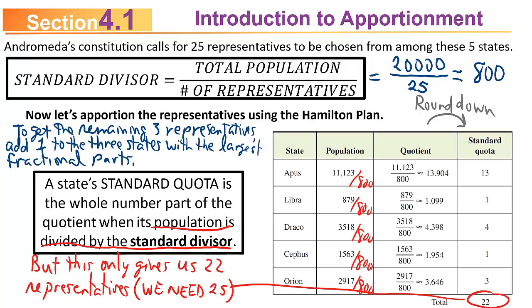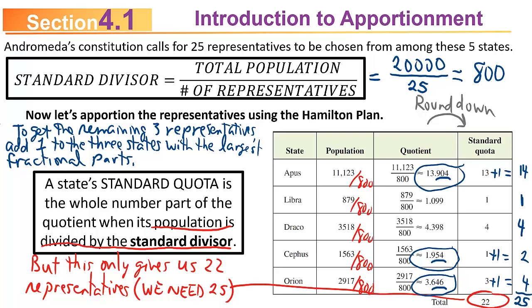With the Hamilton plan, you take whatever you're short and give extra seats to the states with the largest fractional parts. Since we need three more, we find the three largest: 0.954 is the largest, 0.904 is second, and 0.646 is third. So Apis gets an extra seat going from 13 to 14, Cephas goes from 1 to 2, and Orion goes from 3 to 4. Adding those up gives exactly 25.